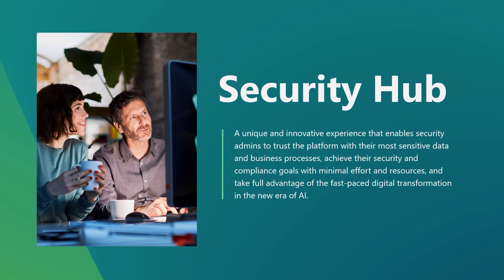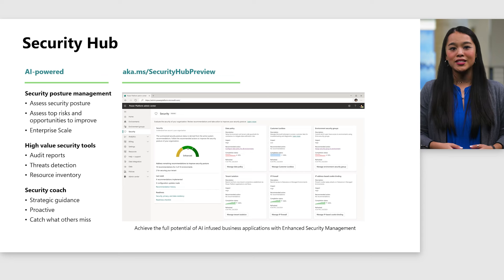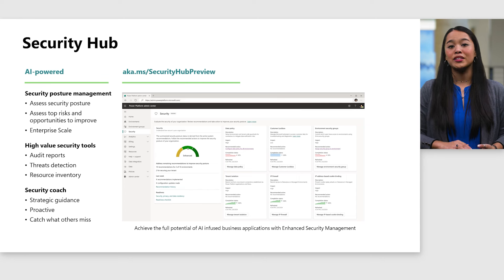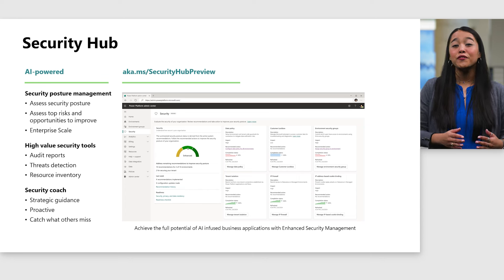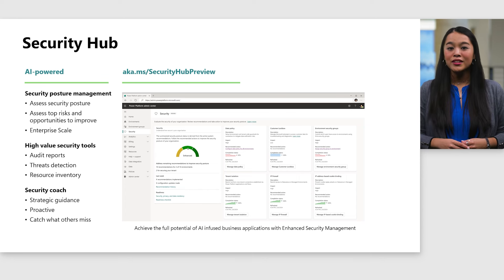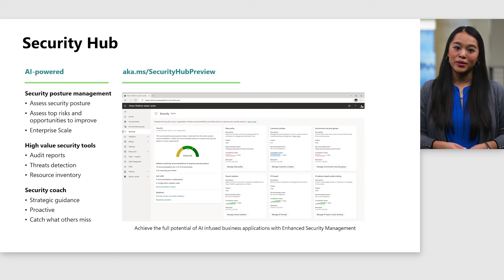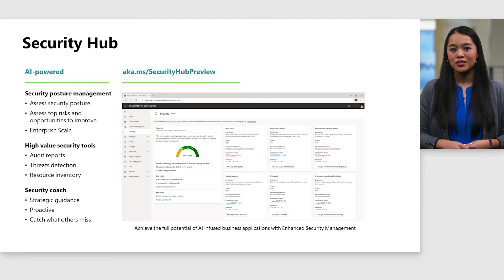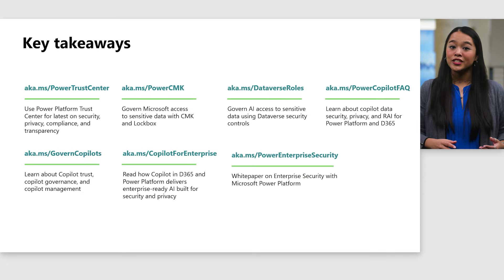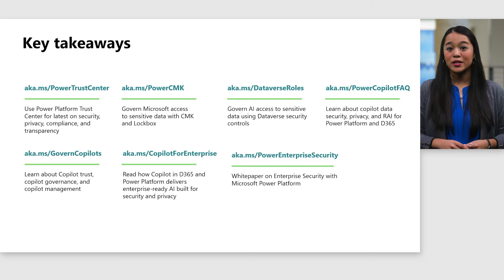We understand that without effective tools for assessing and managing security, administrators resort to restricting citizen developers, slowing the pace of innovation, productivity, and business growth. The upcoming release of Security Hub will help administrators quickly assess security posture, identify and act on prioritized recommendations, use high-value tools to detect threats quickly and effectively, and proactively set policies in place to safeguard from vulnerabilities and risks. To shift left security responsibilities and embrace a shared responsibility model, Security Hub will extend maker experiences with product-specific recommendations, providing the visibility and tooling required to build secure and compliant solutions. Ultimately, Security Hub is a must-have for any organization looking to achieve their security and compliance goals with minimal effort and resources.